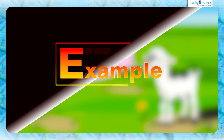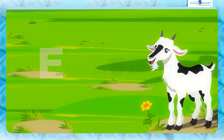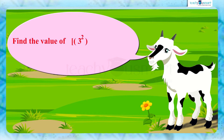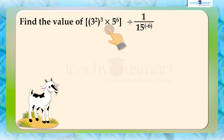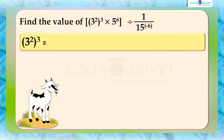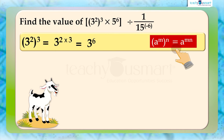Let's do another example. Find the value of 3 raised to 2, the whole cube, multiplied by 5 raised to 6, whole divided by 1 by 15 raised to minus 6. In the given expression, 3 squared the whole cube equals 3 raised to (2 multiplied by 3), equals 3 raised to 6, by the law a raised to m the whole raised to n equals a raised to mn.